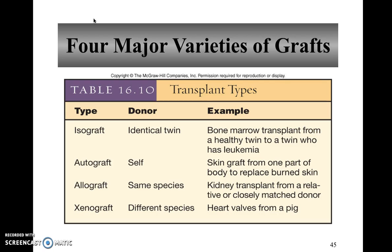Because HLA antigens are proteins, they're coded for by genes — in this case called major histocompatibility, or MHC genes. That's why most often if you're looking for a donor, you look at the person's immediate family because they're probably going to have similar DNA and similar genes. When evaluating an organ transplant, they look at how closely those people's MHC antigens match up.